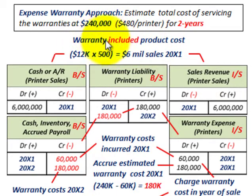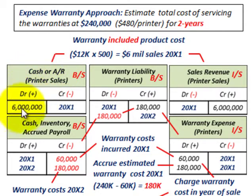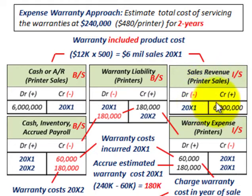Starting with the expense warranty approach, the warranty is included in the product cost. Total cash or accounts receivable on these sales is $12,000 per printer times 500 printers, giving us $6,000,000 in sales in 20x1. We debit cash or accounts receivable on the balance sheet for $6,000,000 and credit sales revenue on the income statement for $6,000,000.